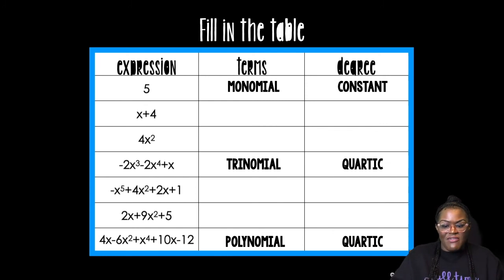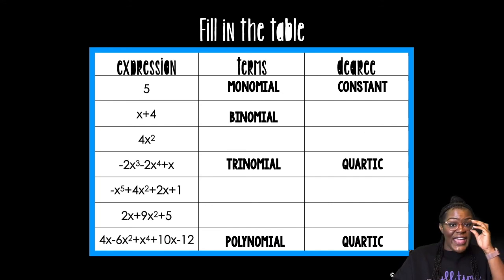Let's go to the second one. So I have x plus 4. How many terms is that? I have an x and I have a 4. So that is two terms, but the fancy word for two terms is binomial. And then I have the degree. So I only have one variable. The variable is x. What's the imaginary exponent on that x? One. But what is the proper term when something only has one exponent? The exponent is one. I call that linear.